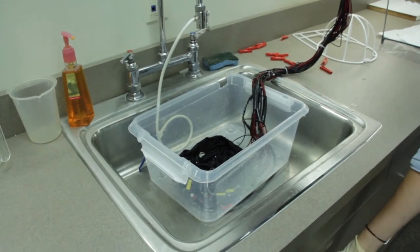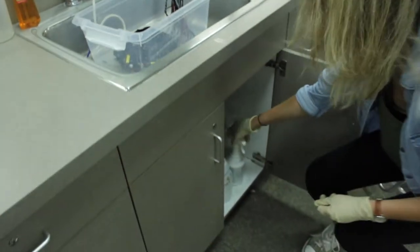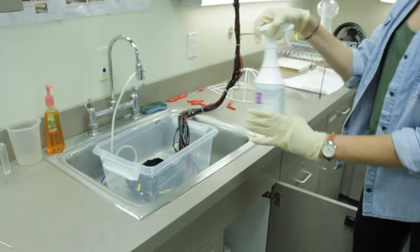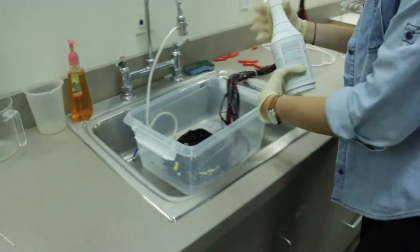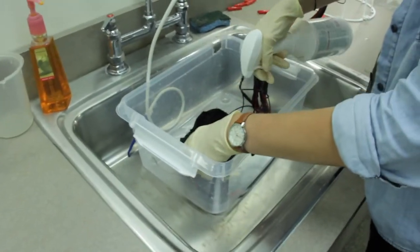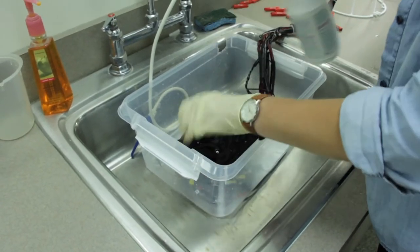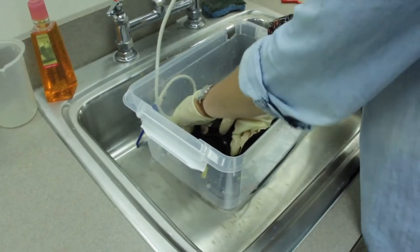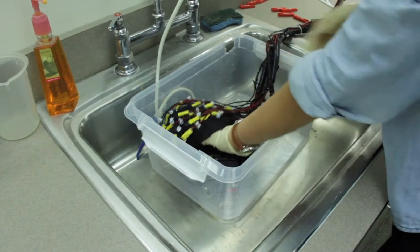After you have rinsed the cap with clean hot water, disinfect the entire cap and electrode surfaces with enviricide, located underneath the sink. Spread the enviricide all around the cap and don't miss any electrodes. Let the enviricide sit for at least 3 minutes before washing it off.